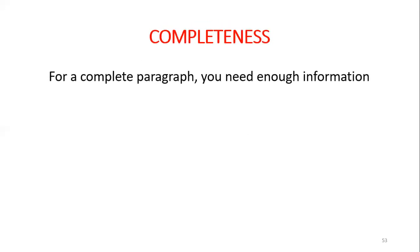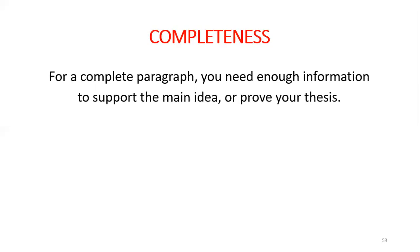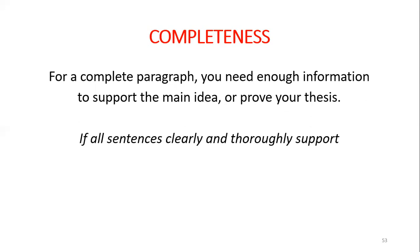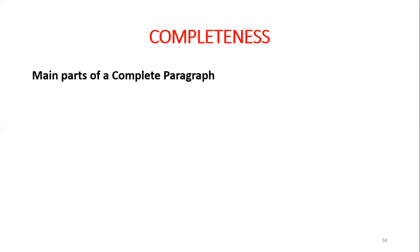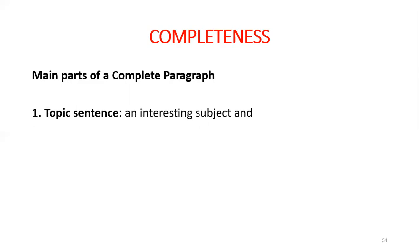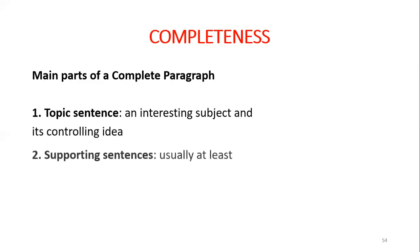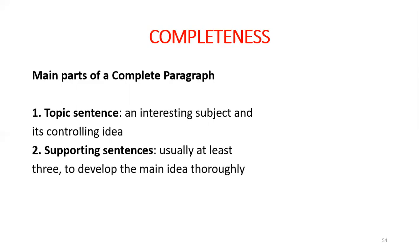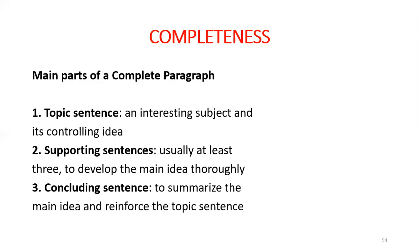The last element is completeness. For a complete paragraph, you need enough information to support the main idea or thesis. If all sentences clearly and thoroughly support the main idea, the paragraph is complete. A complete paragraph must have three parts: a topic sentence, supporting sentences — usually at least three to develop the main idea thoroughly — and a concluding sentence to summarize the main idea and reinforce the topic sentence.